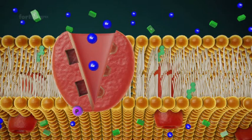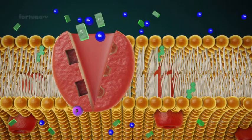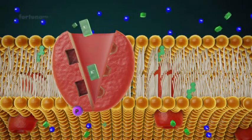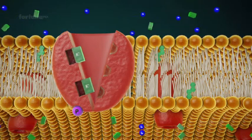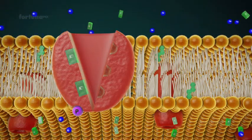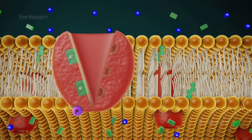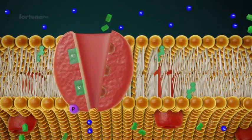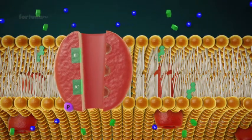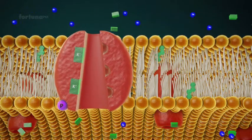Sodium ions will move out on the outside. Two potassium ions will bind to the specific sites on the protein channel. Consequently, the channel will change its shape again, this time opening towards the inside of the cell.